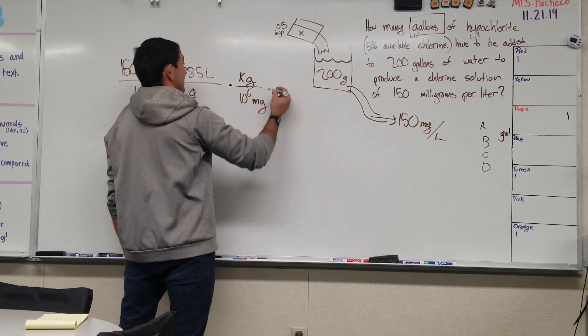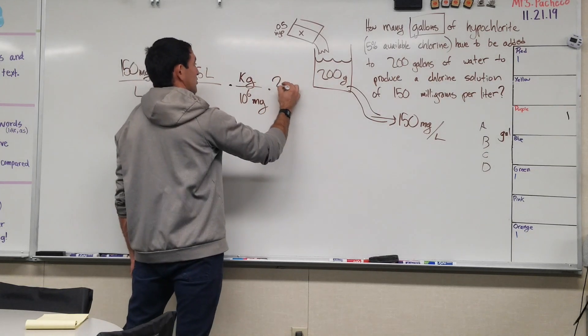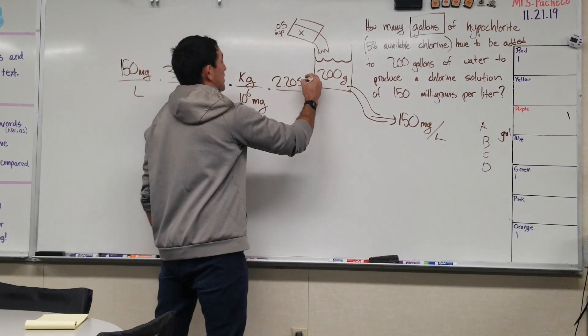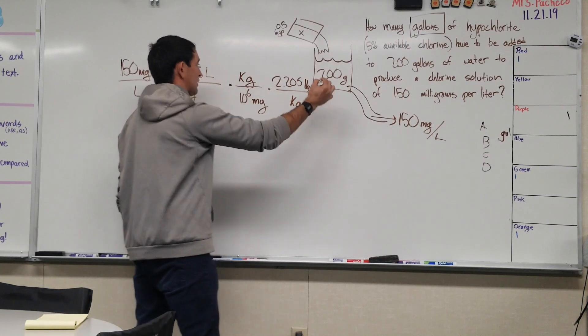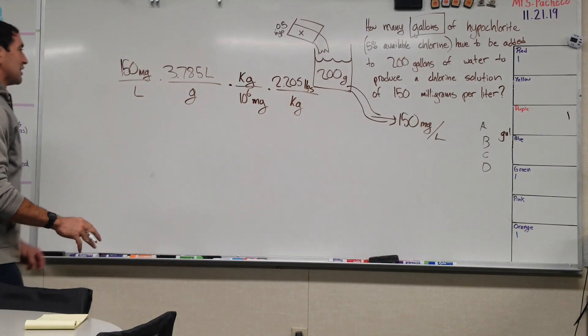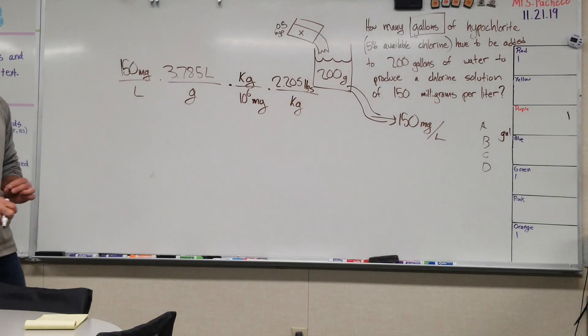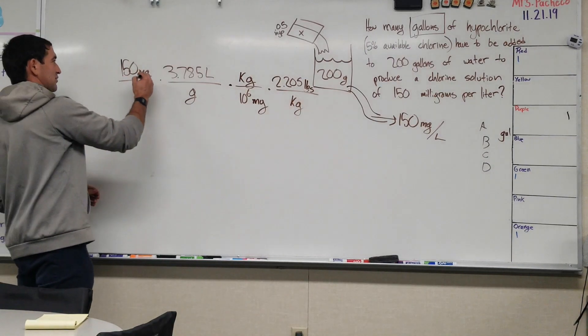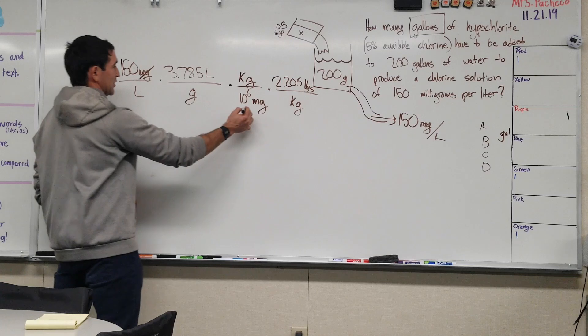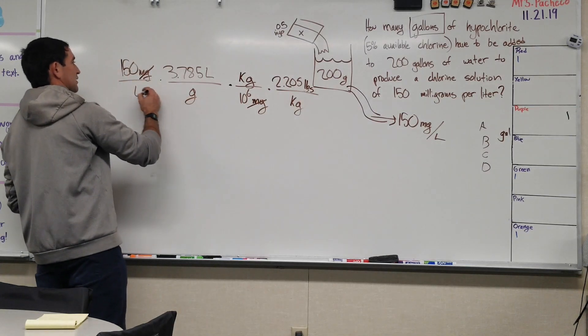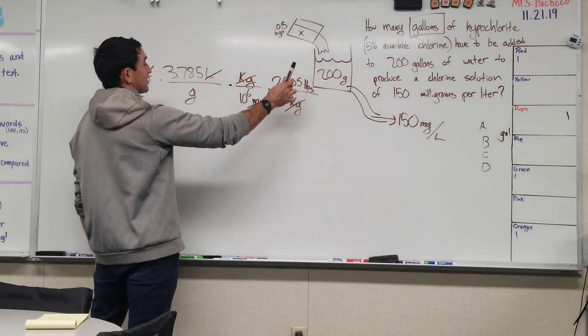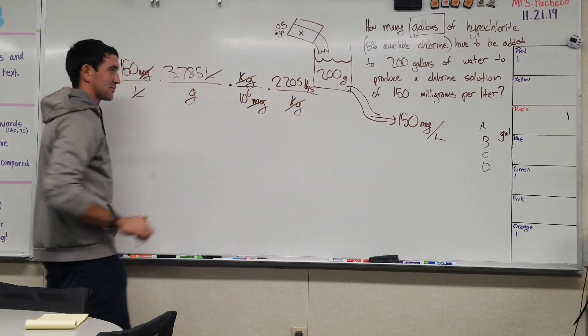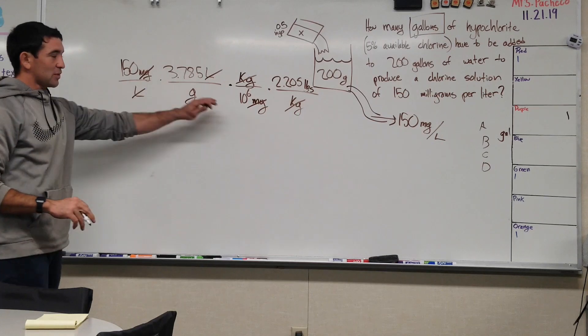And to convert kilograms to pounds, there's 2.205 pounds per kilogram. And so you lay it all out like that, right? And look at the funness, the attitude. There go your milligrams. There go your liters. There go your kilograms. And you're left with pounds per million gallons. And so when you multiply all that, you end up with 1.251 pounds per million gallons.